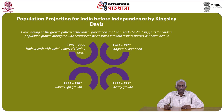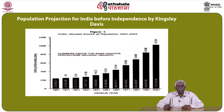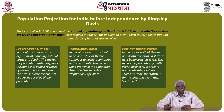Commenting on the growth pattern of Indian population, the census suggests that India's population growth during the 20th century can be classified into four distinct phases: stagnant population from 1901 to 1921, steady growth from 1921 to 1951, rapid high growth thereafter, and a definite sense of slowing down starting from 1981. This is clearly shown in the decadal growth of population over time for India. The census of India clearly shows that the story of population growth is fairly in tune with the classical theory of demographic transition.